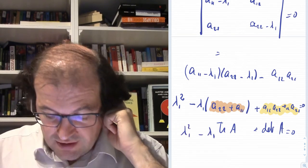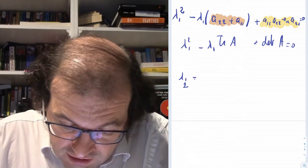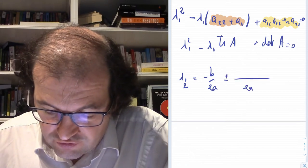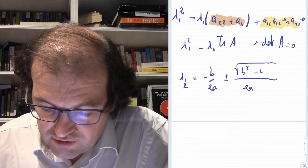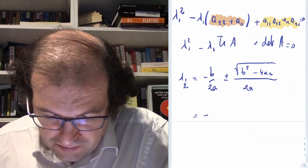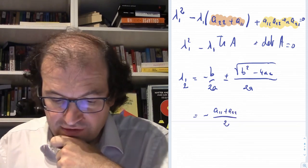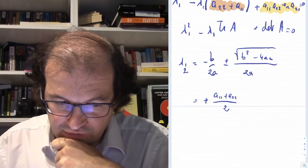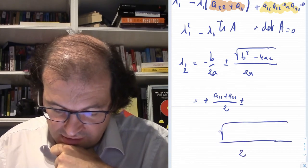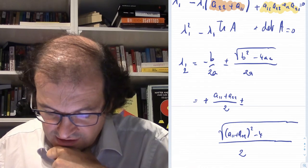Solving the quadratic equation, the eigenvalues are λ₁,₂ = −b/(2a) ± √(b² − 4ac)/(2a), where a = 1, b = −(a₁₁ + a₂₂), and c = det(A). This gives λ = (a₁₁ + a₂₂)/2 ± √[(a₁₁ + a₂₂)² − 4(a₁₁·a₂₂ − a₁₂·a₂₁)] / 2.